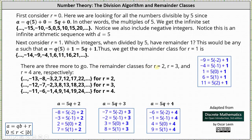We have three more classes to consider: r equals two, r equals three, and r equals four. For r equals two, we look for integers a where a equals five q plus two. For r equals three, we look for integers a where a equals five q plus three. For r equals four, we look for integers a where a equals five q plus four, where q is any integer in each case. Looking at the work shown, the remainder class for r equals two is the set of integers that, when divided by five, have remainder two; the remainder class for r equals three has remainder three; and the remainder class for r equals four has remainder four.